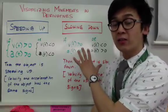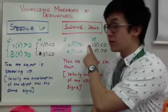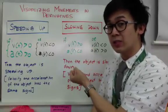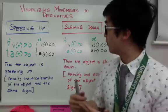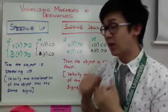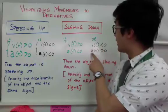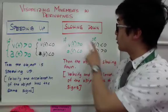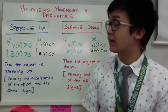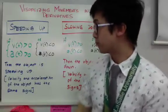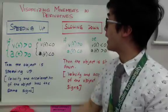Slowing down works differently. If the velocity of your function is positive and the acceleration from the second derivative is negative, the object is slowing down. If they have different signs — velocity positive and acceleration negative, or velocity negative and acceleration positive — your object is slowing down. That is the simple rule of calculus when looking at whether an object is speeding up or slowing down.